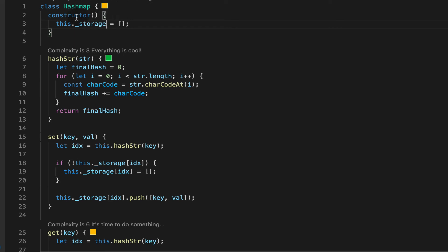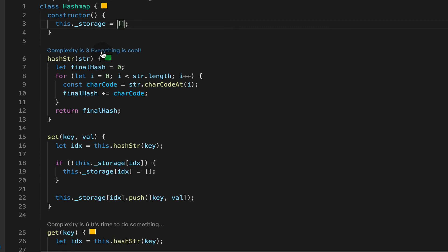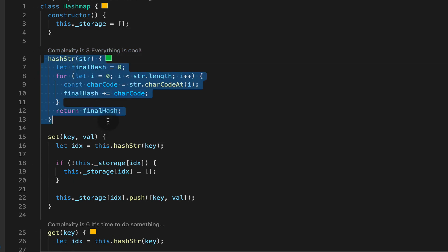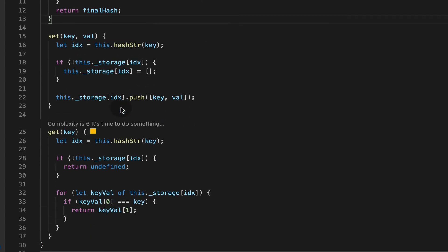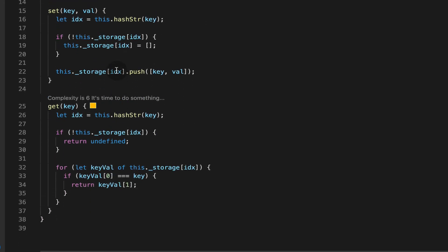Within the constructor we initialize a private instance variable called this.underscore storage and we initialize it with an array. So the array will be the secret weapon under the hood that is doing the actual storing of the values. We have the hash string method that's going to be our hashing function. We've already covered that.